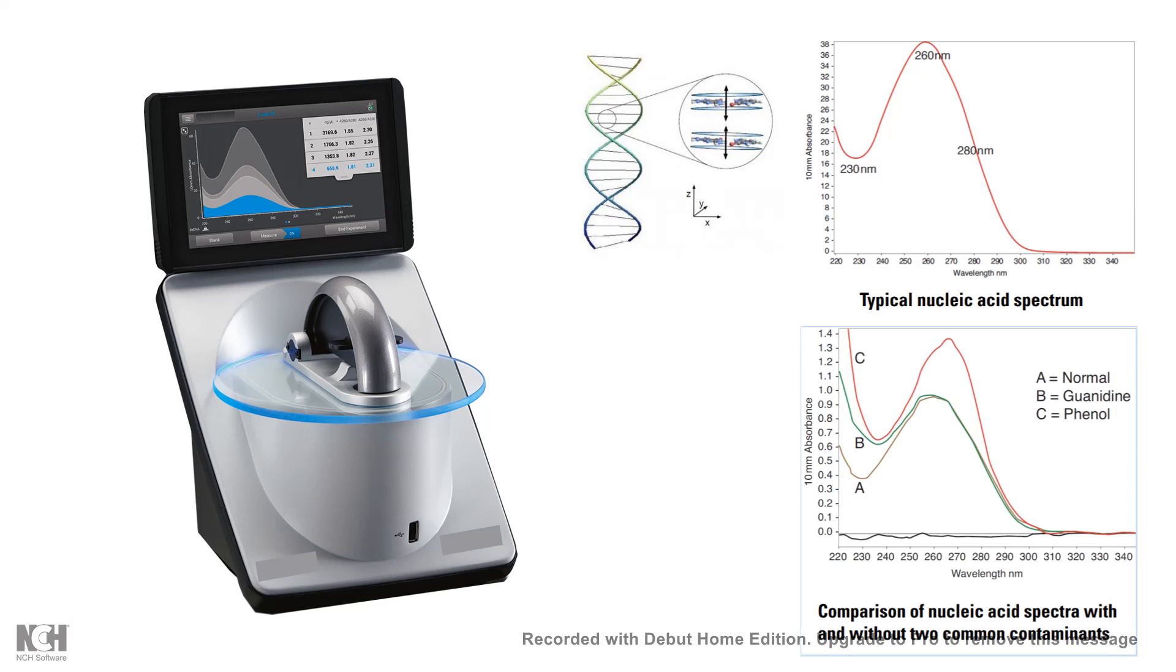When there are impurities, this nanodrop can also display that because let's say in purification there is a contamination of phenol or guanidine isothiocyanide. All these things can be measured by the nanodrop because nanodrop previously knows their absorbance range, right?